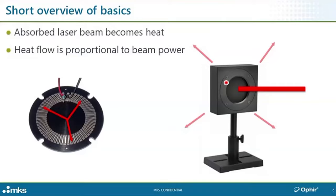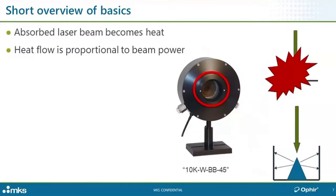Here are some smaller disks for obviously lower power sensors — you can still see the thermopile. Here's an even smaller disk. I mentioned the other half of the measurement instrument — the meter. Here you see an example of a meter with a cable going out to the sensor. I'm keeping the information as generic as possible so it'll be helpful to as many of you as possible, including those using equipment that's not Ophir. The concepts are the same.